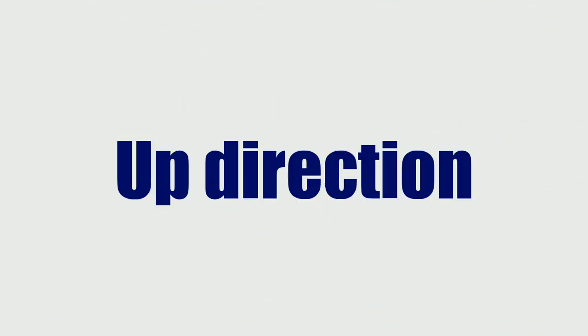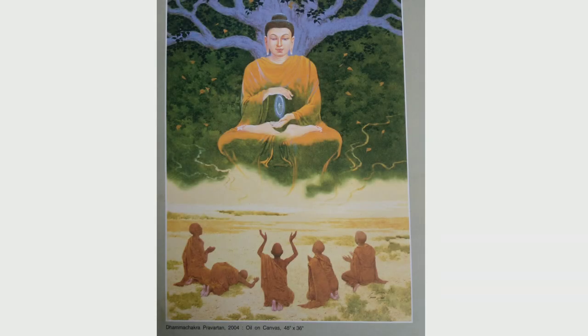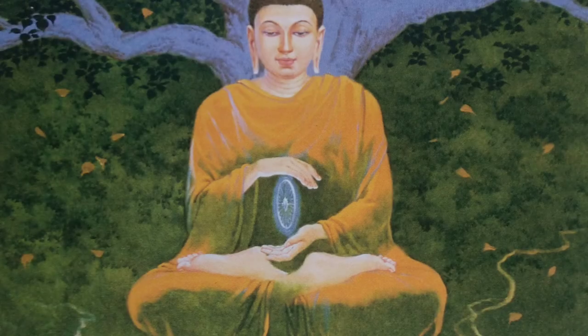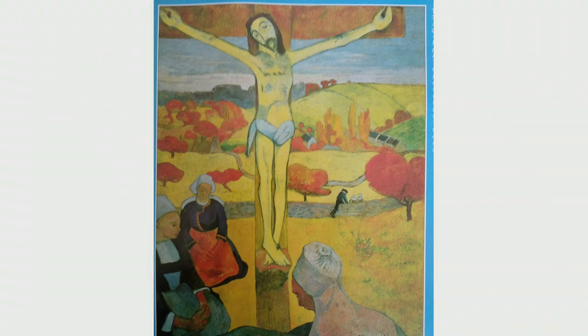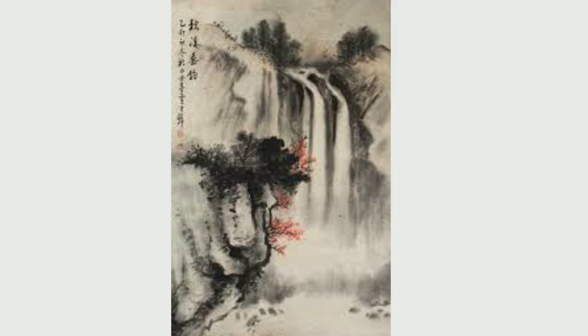Downward space is created in this abstract painting by vertical line and slanting line. Also, typically spiritual paintings use upward space. See this beautiful painting of Vastadra Kamal — of Buddha. Also the Christ by Paul Gauguin. Here the spiritual figures are placed upward. Downward space is created by an upside-down triangle, and in this Chinese painting, the downward space is created naturally.